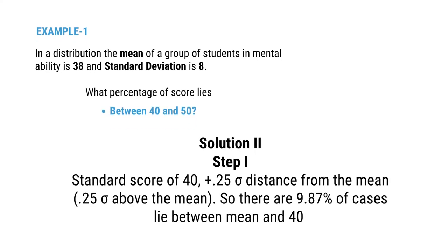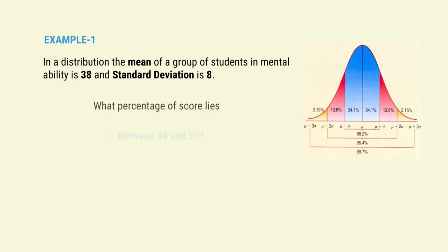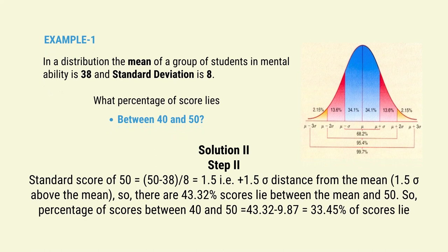Coming to the second part: what percentage of scores lie between 40 and 50? The standard score of 40 is 0.25 sigma above the mean, so 9.87% of cases lie between the mean and 40. Step 2: Standard score of 50 equals 50 minus 38 divided by 8, which equals 1.5 — that is, 1.5 sigma above the mean. There are 43.32% of scores lying between the mean and 50. Therefore, the percentage of scores between 40 and 50 equals 43.32 minus 9.87, which equals 33.45% of scores.